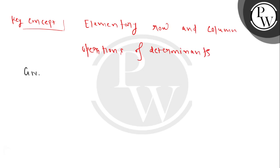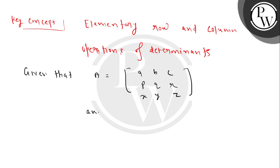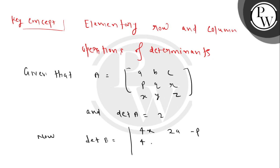Given that our matrix A is: a, b, c / p, q, r / x, y, z. And determinant of A equals 2. We need determinant of B, which comes out as: determinant of [4x, 2a-3 / 4y, 2b-q / 4z, 2c-q]. Now we will take 4 common from the first column and 2 from the second column, and minus from the third column.